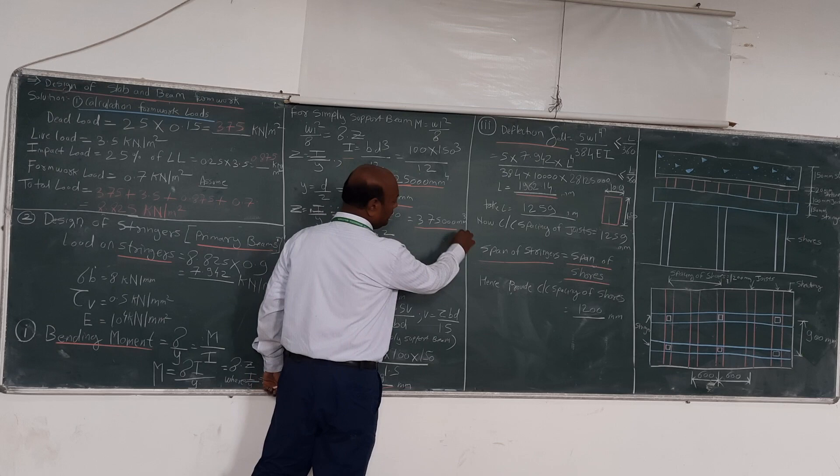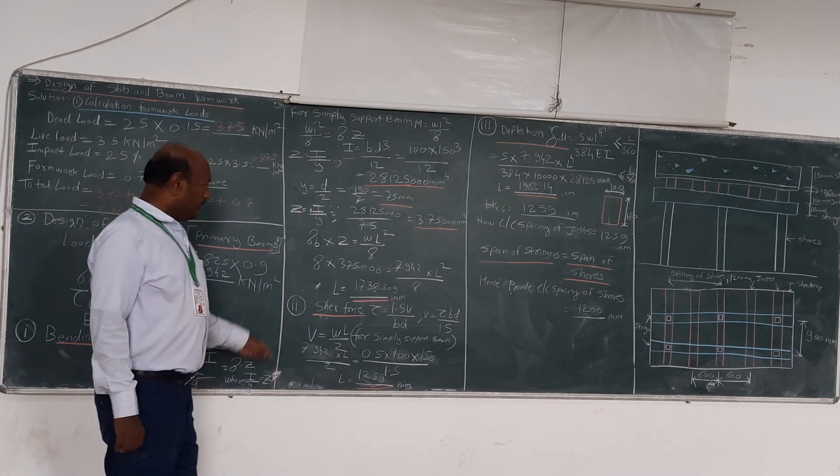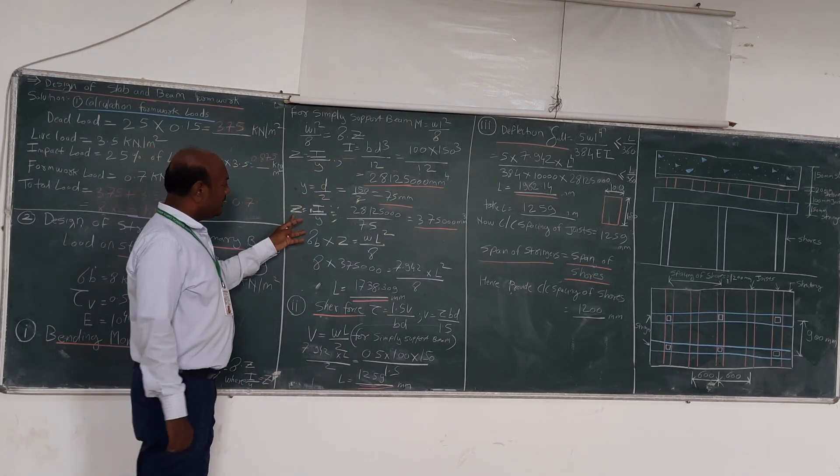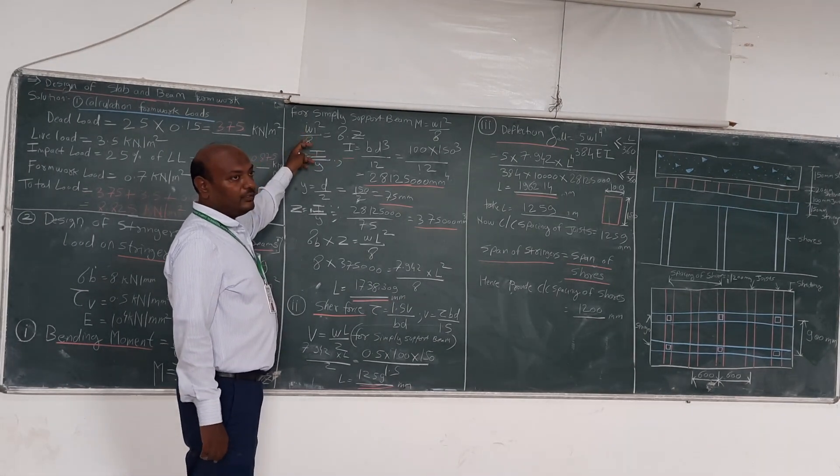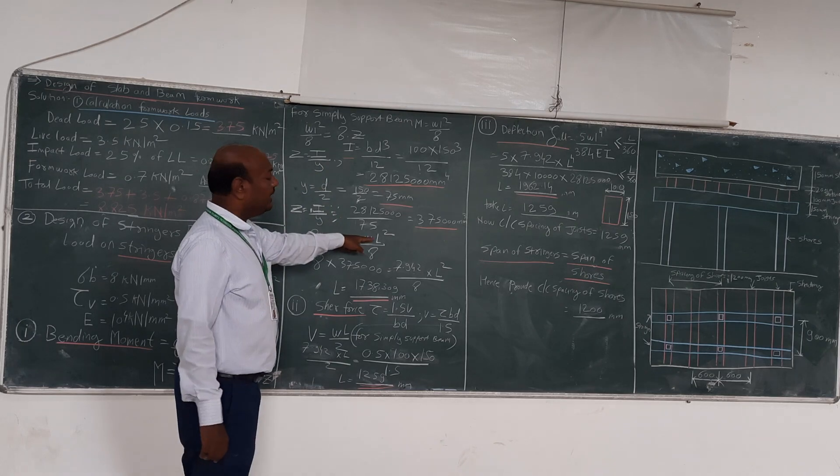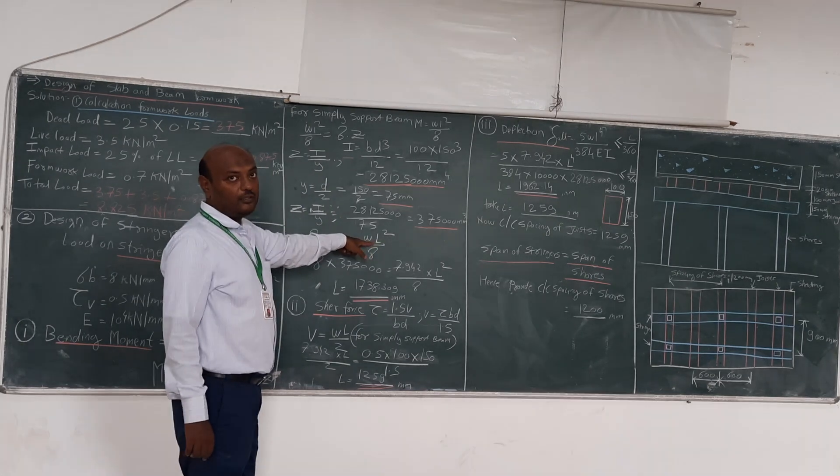So you have to find out Z, that is I by y. That is 1 million mm cubed. Now we will put this value of Z in this formula. And all the values are given in the question except w and except L. So here we will find out L. w we have already calculated here.